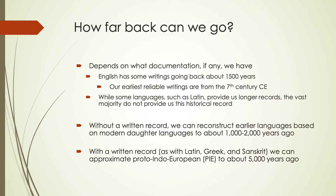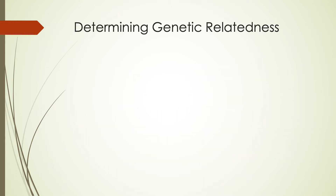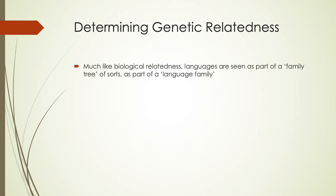One way we try to figure out how languages are related and what the previous language looked like is by using steps to determine what we call genetic relatedness. Similar to how biological relatedness works, where you have taxonomies that say what the general family is and different branches that branch off with more specifics, we think of languages as having a sort of family tree — a language family — in the same general way.